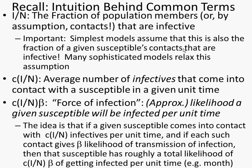The first key thing is the term I over N. N is the total number of people in the population; if the population size is changing, we might write this as S plus I plus R. If there are births, deaths, and immigration, N won't be a constant. But if the population is constant, we write it as N. The point is that this is the fraction of population members who are infected. We're going to assume that this overall global fraction is in fact the same as the fraction faced by any particular individual.